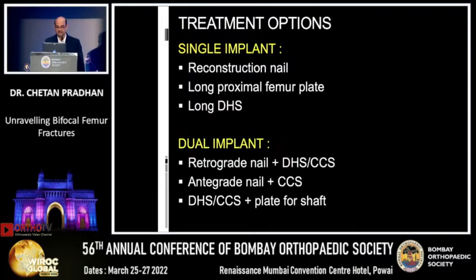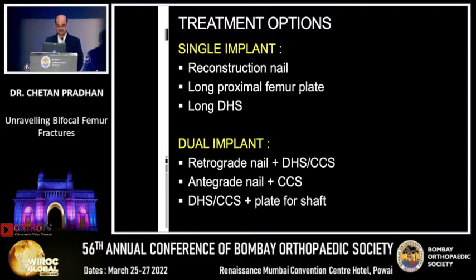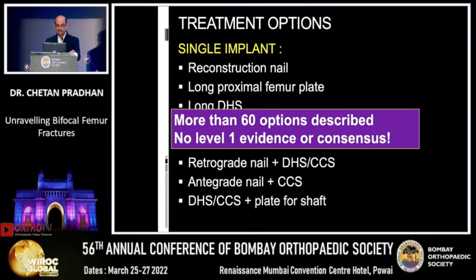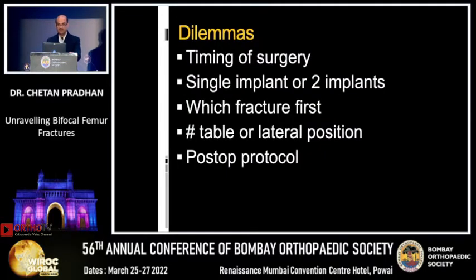These are the cases where so-called iatrogenic neck femur fractures are produced on the table — they were not iatrogenic, but had a suspected fracture. Treatment options are either a single implant assembly — reconstruction nails, long plates, long DHS — or dual implant assemblies, which are more favored nowadays: retrograde nail with a DHS or cannulated cancellous screws, or antegrade nail with CCS or a plate. Mind you, there are many options and no level 1 evidence or consensus.